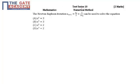Hello students, the following question is from Test Series 10, subject Mathematics, chapter Numerical Method. The question is asked for two marks. The question is: the Newton-Raphson iteration x_{n+1} equal to x_n by 2 plus 3 by 2 times x_n can be used to solve the equation, one of the following.